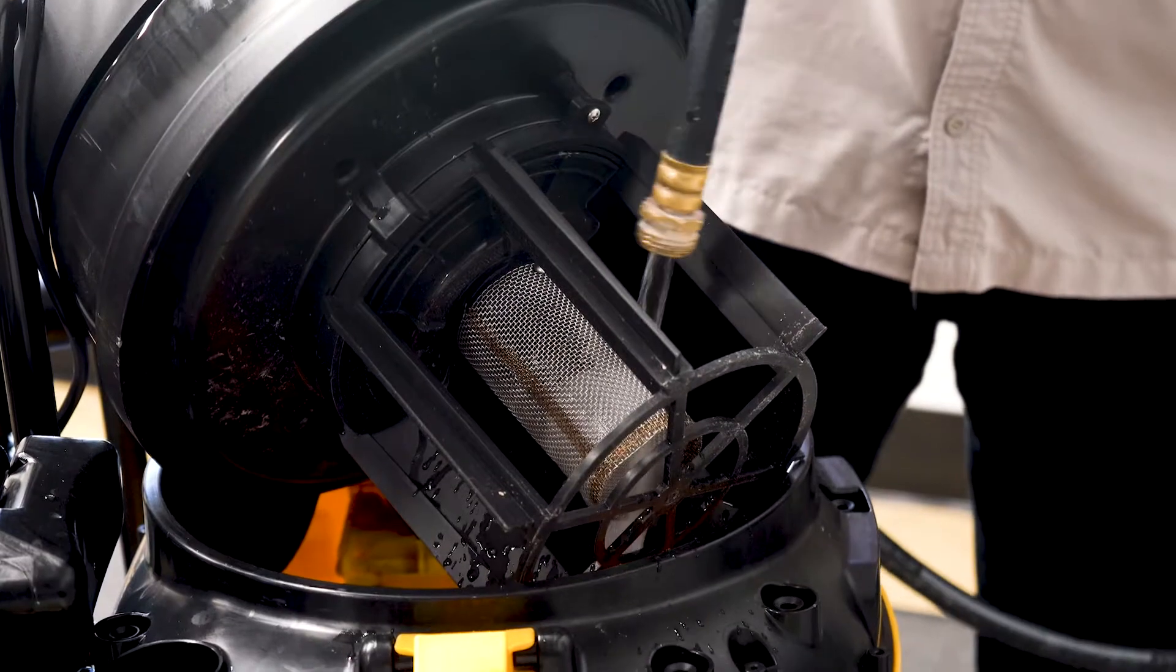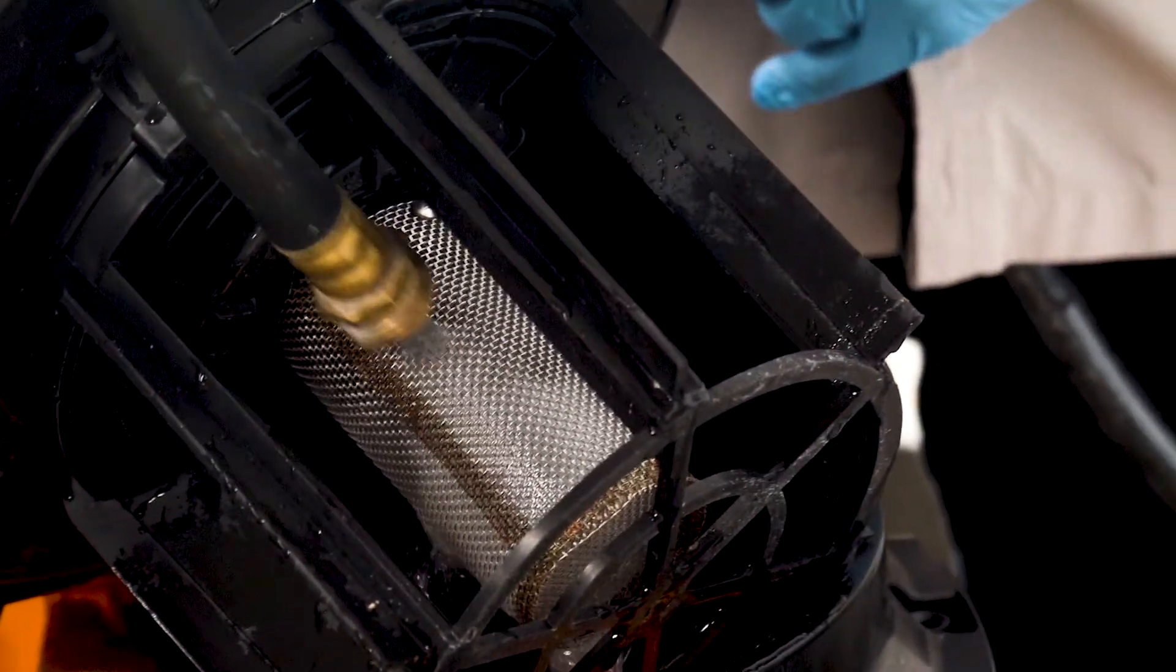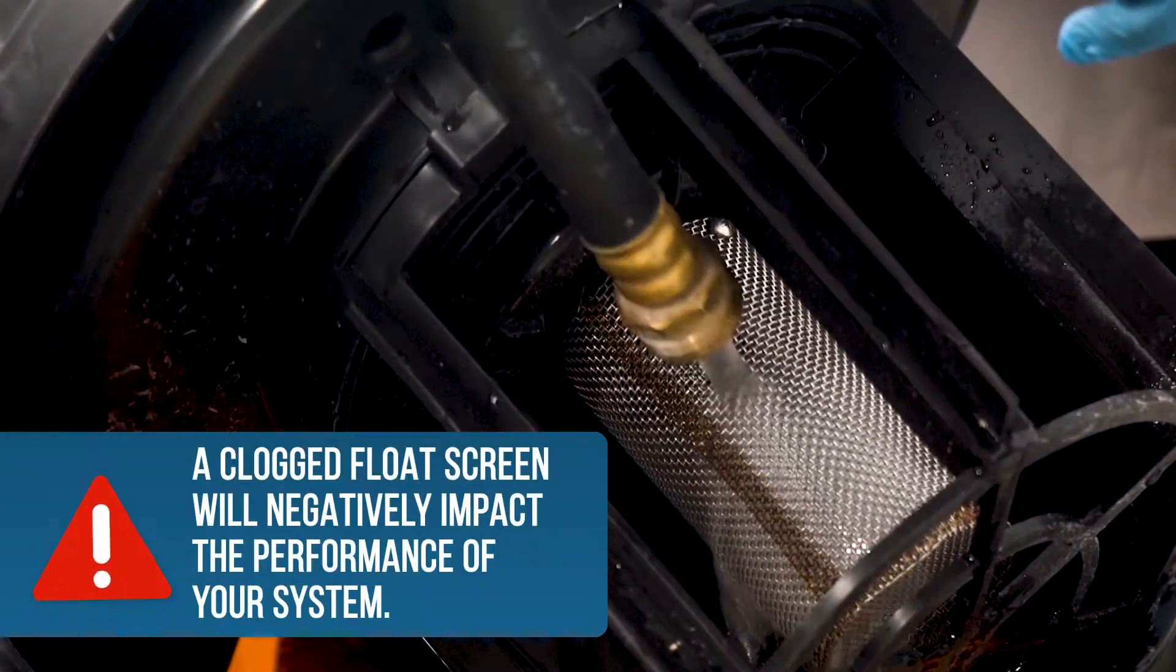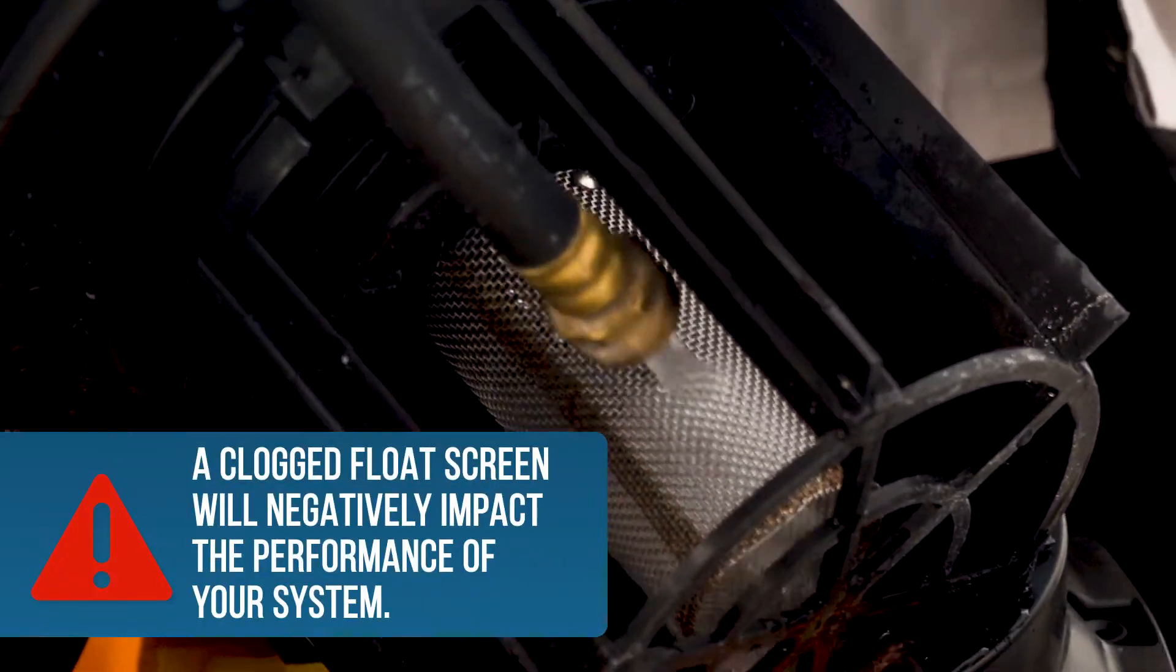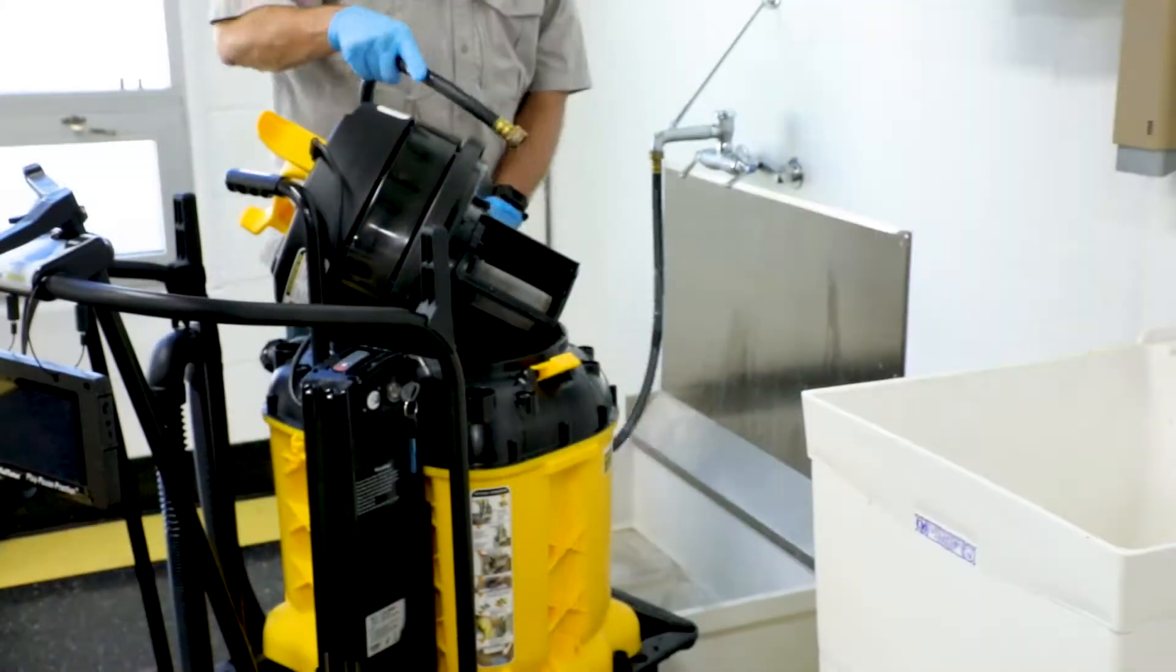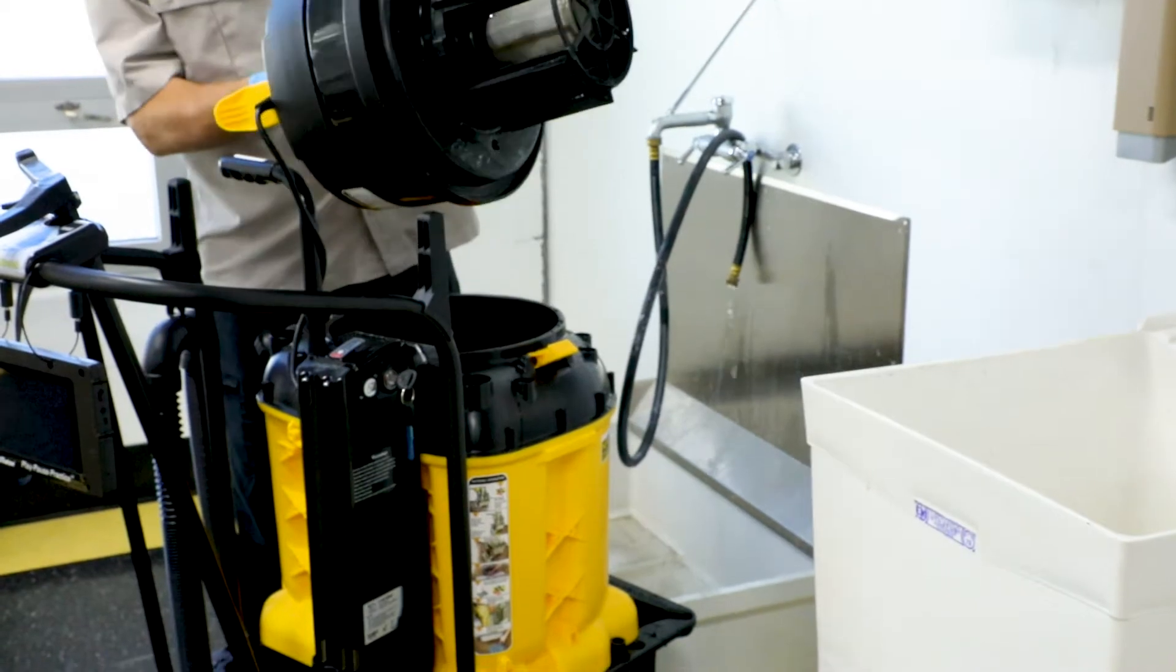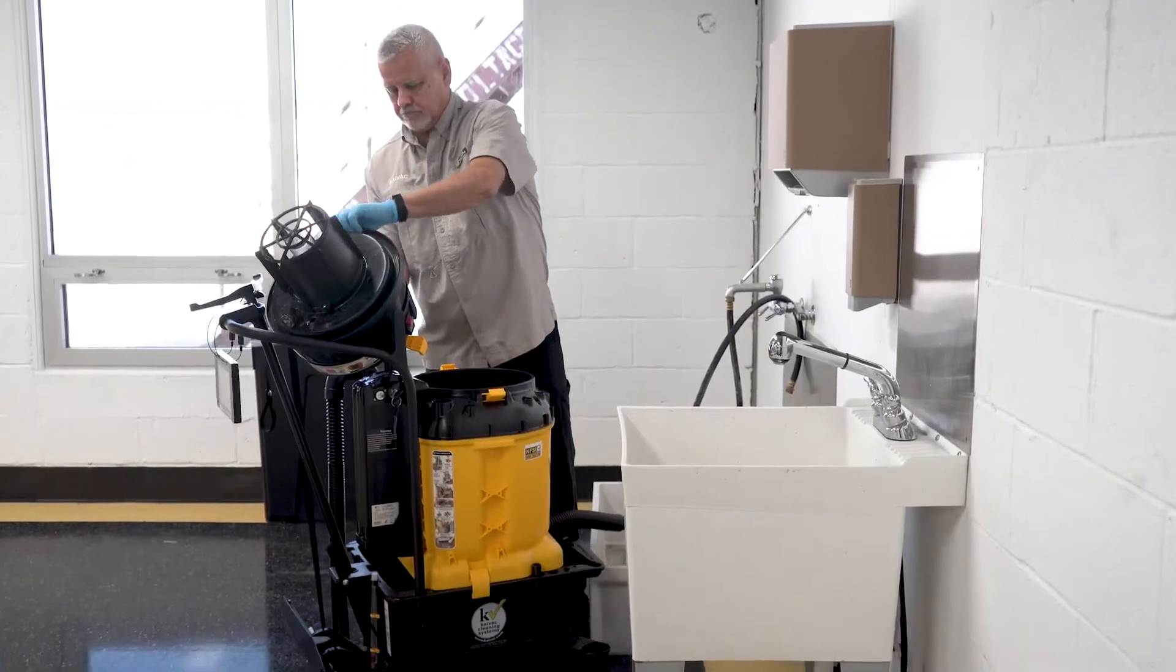Now use a hose to rinse the float cage. This step is very important and should be performed after each use. A clogged or dirty float screen can negatively impact the performance of the vacuum. Once the float cage has been rinsed, set the vacuum motor back on the system's handle while we rinse the inside of the vacuum tank.